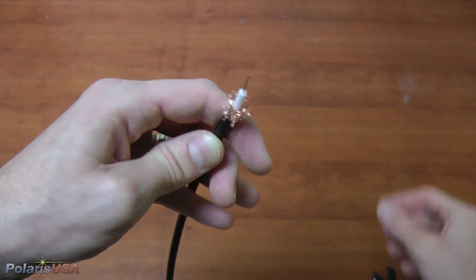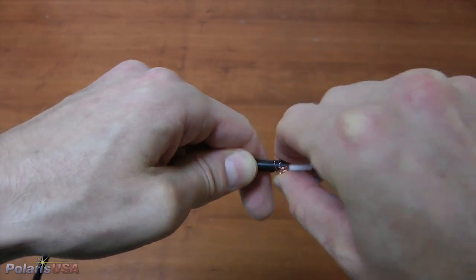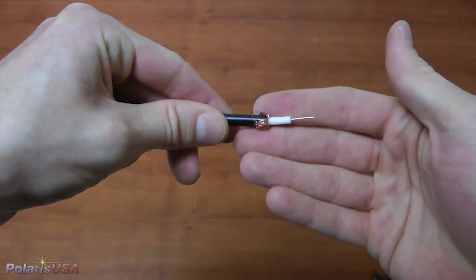You only need approximately a quarter of an inch radius of outer shielding. After trimming, peel back the outer shielding so that it hugs the outer insulation, leaving your cable like this.